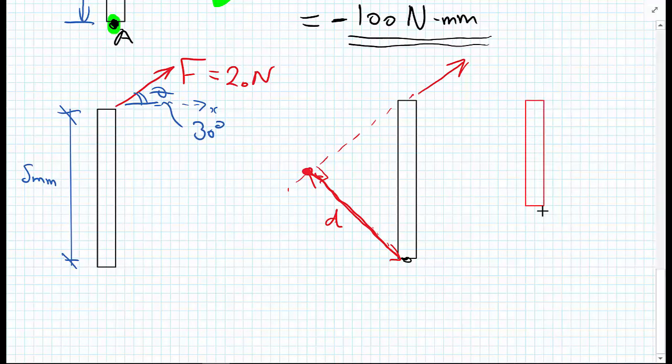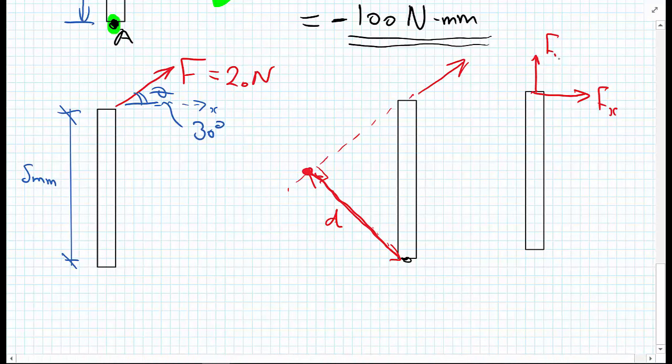An alternative method would be to split my F into two Cartesian components of the vector, Fx and Fy. Now, taking moments about point A, we can see that Fy, the line of action of the force, goes directly through A and has no lever arm from A, so it's creating no moment whatsoever. Whereas Fx has a lever arm equal to the five millimeters. So my moment is going to be Fx times the five millimeters.